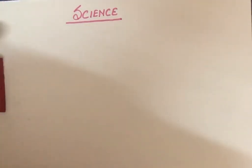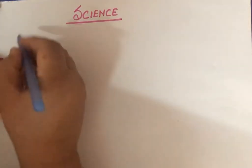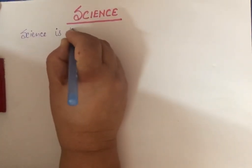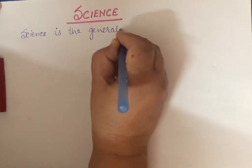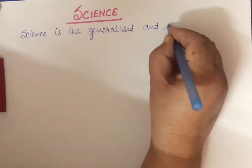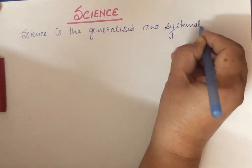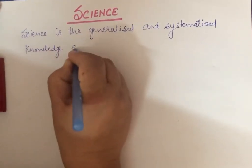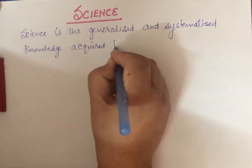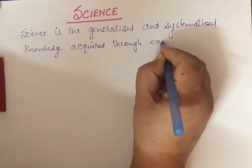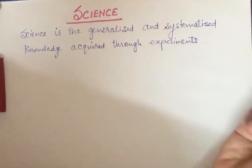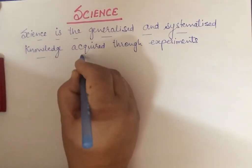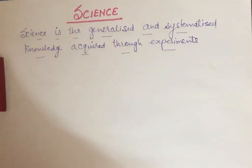What is science? How do we define science? Science is the generalized and systematized knowledge acquired through experiments.